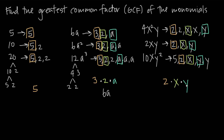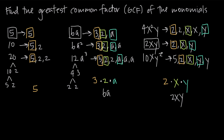So we multiply our results together and say that 2xy is the greatest common factor of 4x squared y, 2xy, and 10xy squared. Now I want to make sure we're careful here, because in these three examples we took out a 5, which happened to be our smallest number; we took out 6a, which happened to be our smallest monomial; and we took out 2xy, which happened to be our smallest. But that won't always be the case.